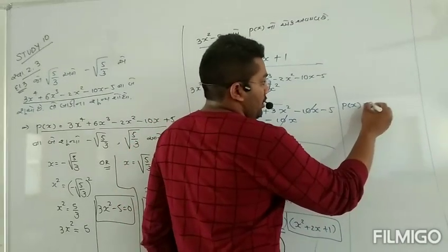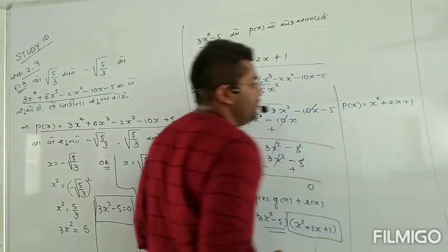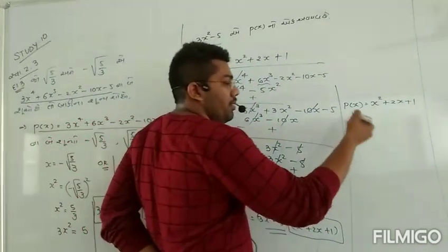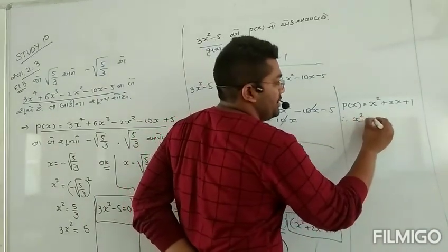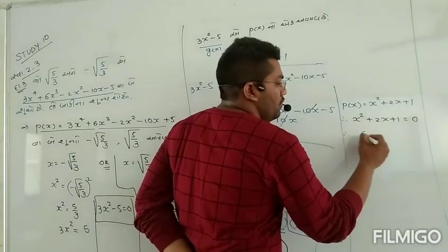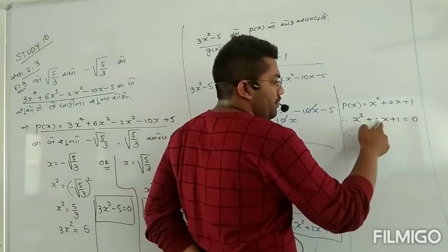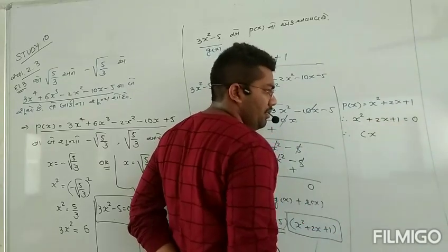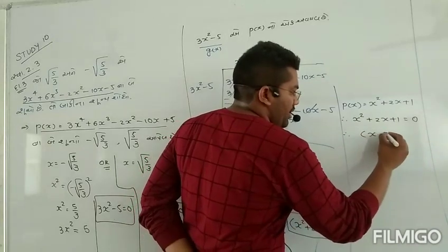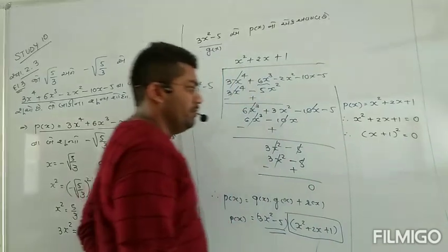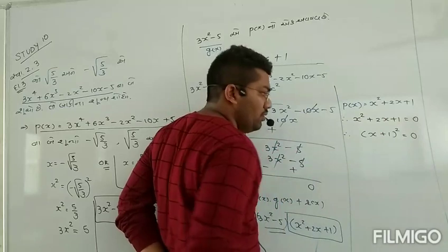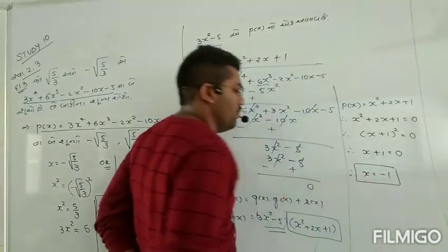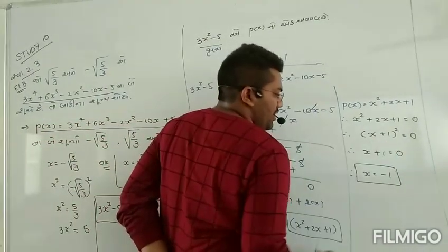p of x is x work plus 2x plus 1. So p(x) = 0: x work plus 2x plus 1 equals 0. So we can see x work plus 2x plus 1. We can see 2 to 1 plus 1. We can see x plus 1 equal to 0. And that the case would look like x is equal to minus 1.